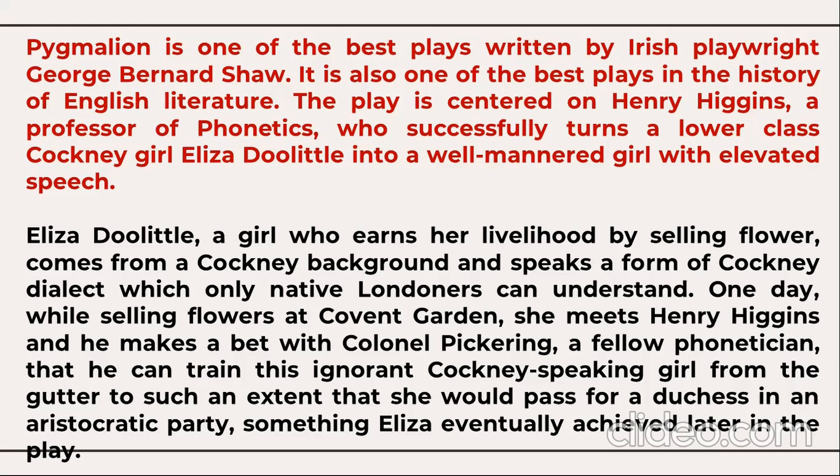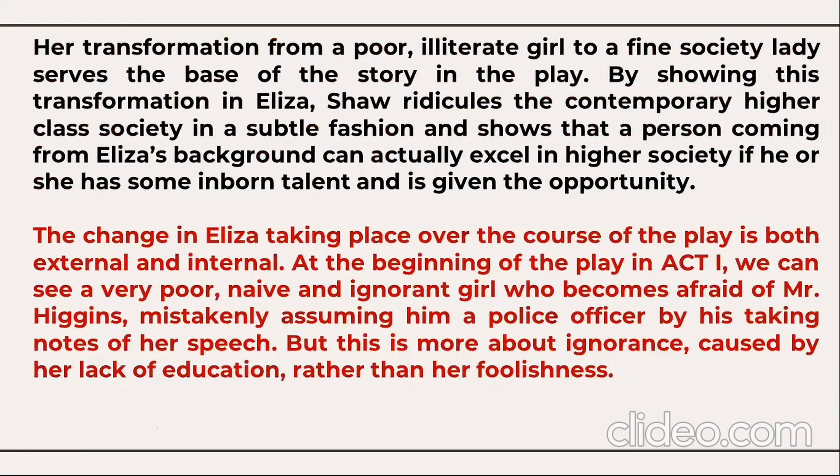Eliza Doolittle is a girl who earns her livelihood by selling flowers. One day while selling flowers at Covent Garden, she meets Henry Higgins, who makes a bet with Colonel Pickering, a fellow phonetician, that he can train this ignorant Cockney-speaking girl from the gutter to such an extent that she would pass for a duchess in an aristocratic party — something Eliza eventually achieves later in the play.